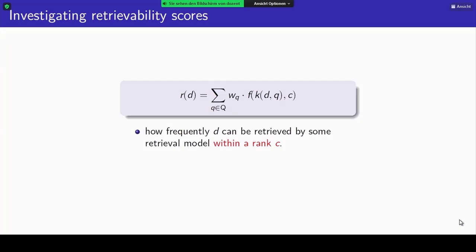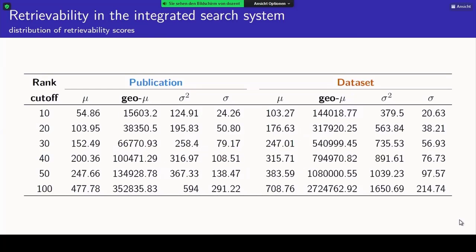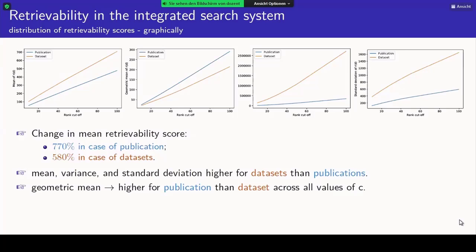The retrievability score computation has only one parameter, C, which is the rank cutoff within which we want to compute retrievability. We varied the parameter from 10 to 100 at a step of 10 and computed the distribution for publications and datasets. From C value 10 to 100, there is more than 700% increase for publications and almost 600% for datasets. Mean, variance, and standard deviation are always larger for datasets than publications.